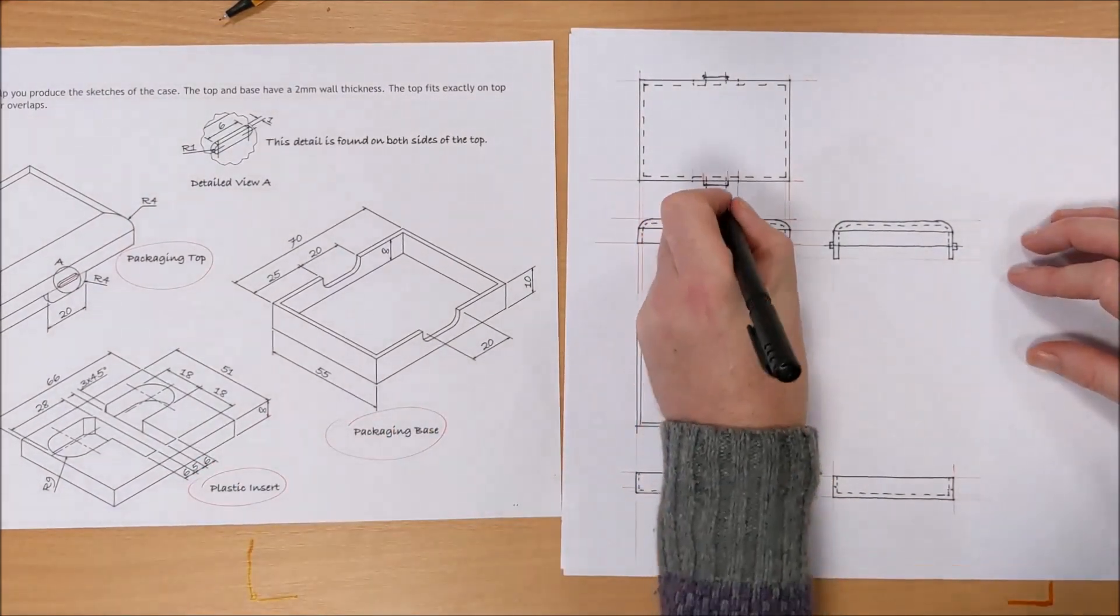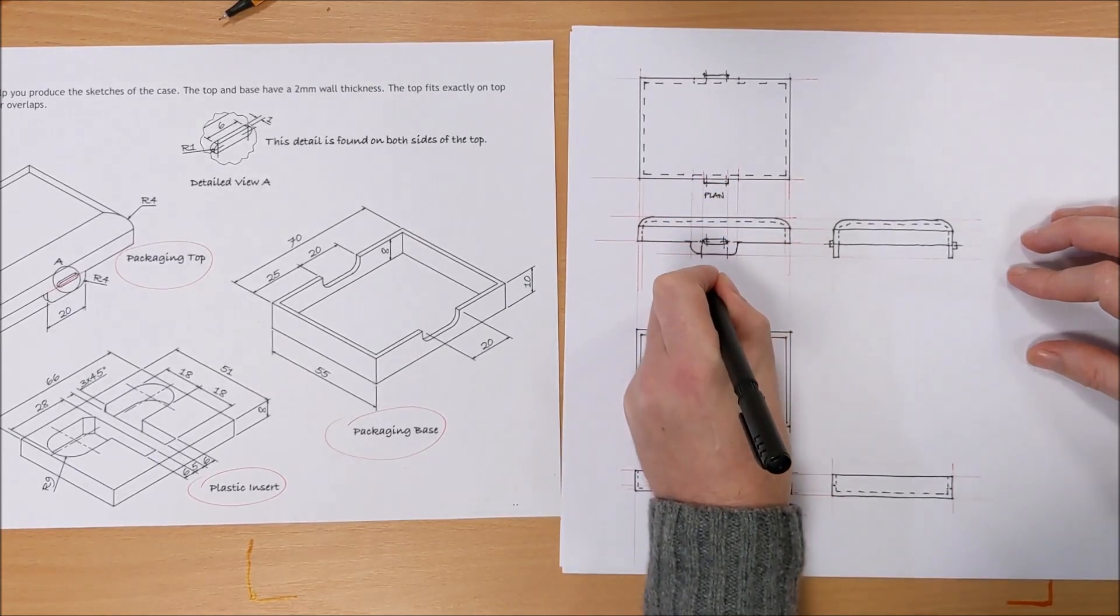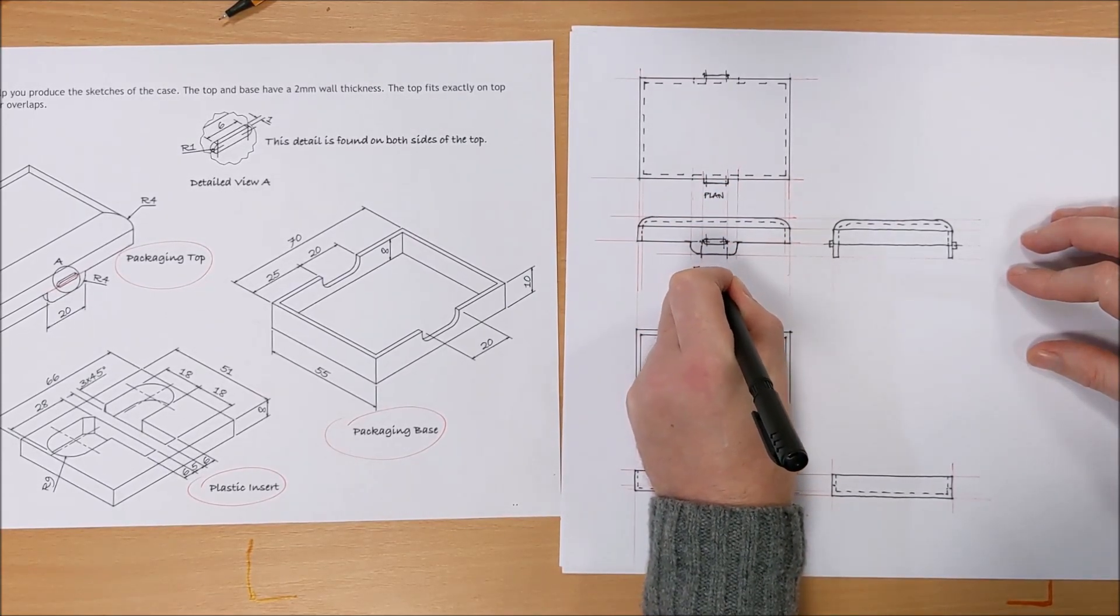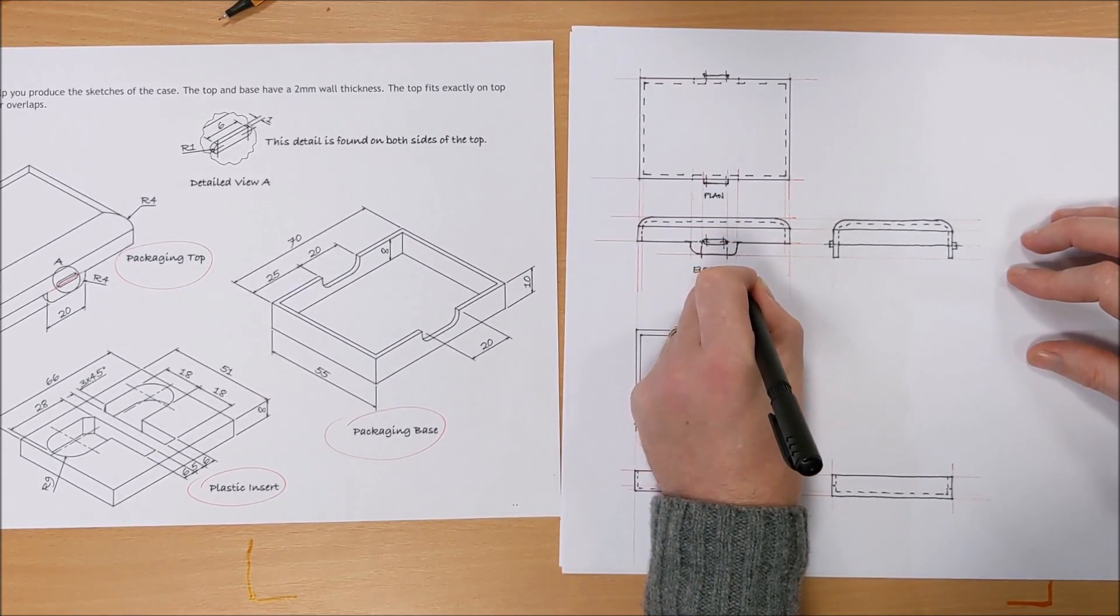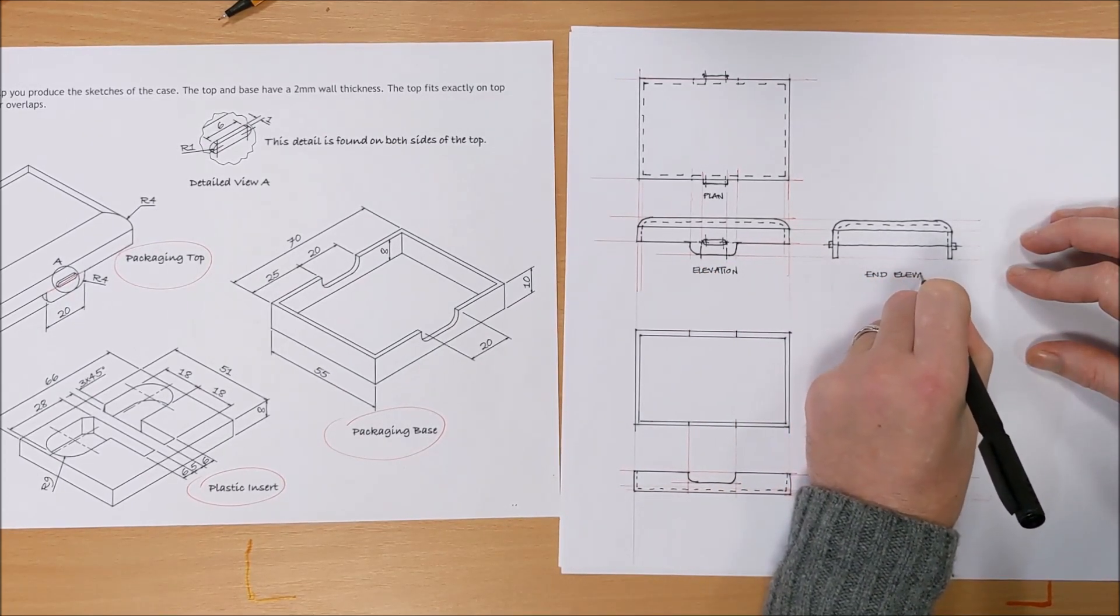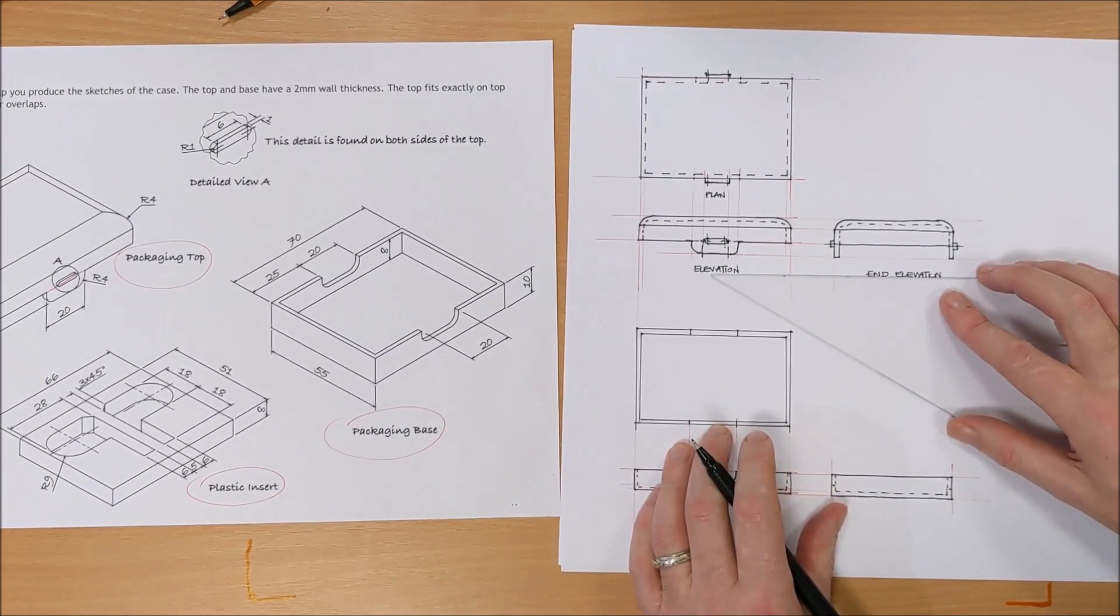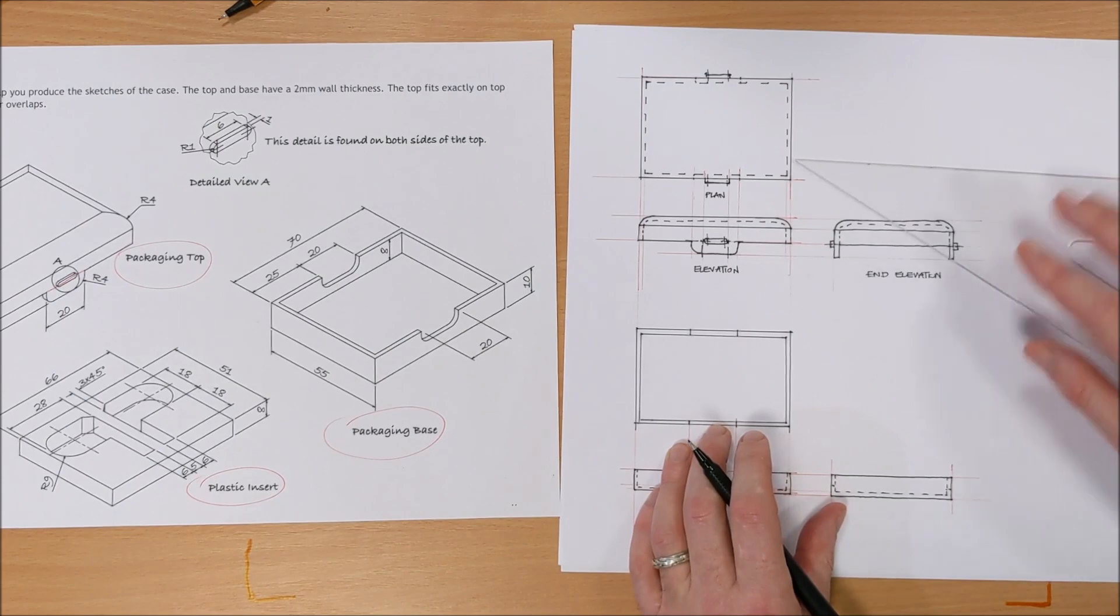They all need a title now. So we have in capitals. Plan. Elevation. And end elevation. You're always trying to make your words so that the top of them and the bottom of them are all in line.